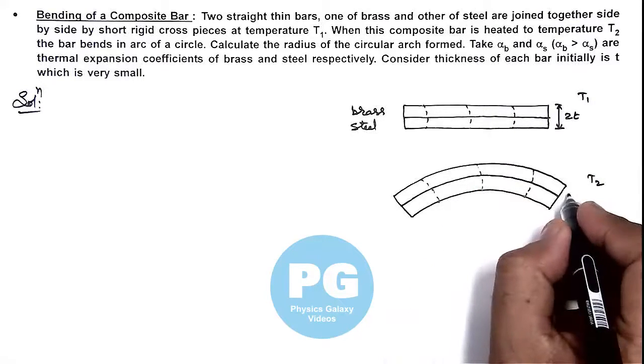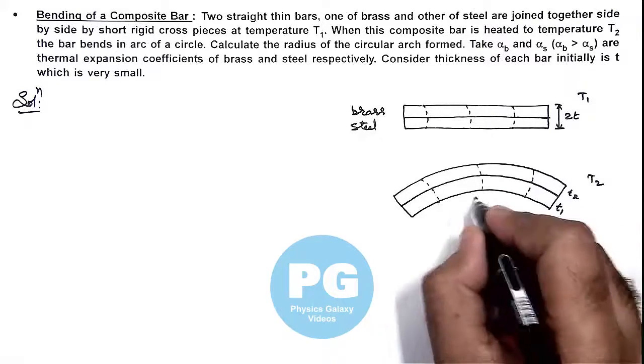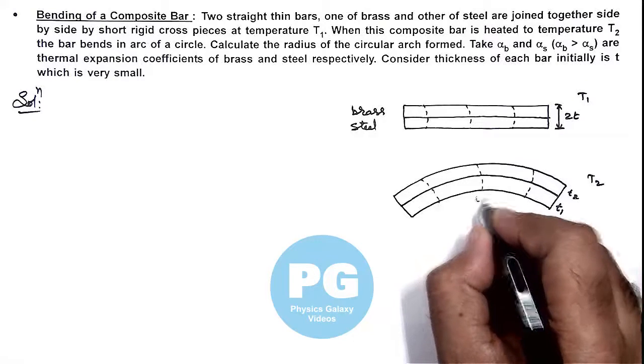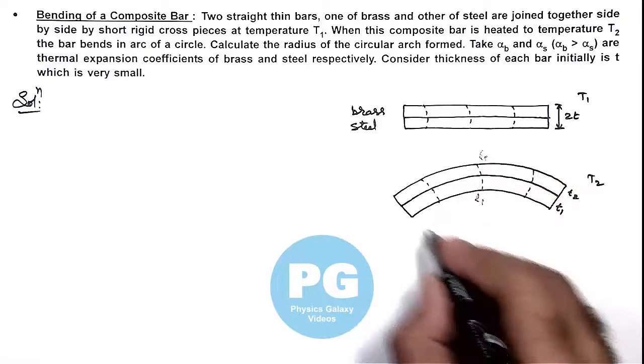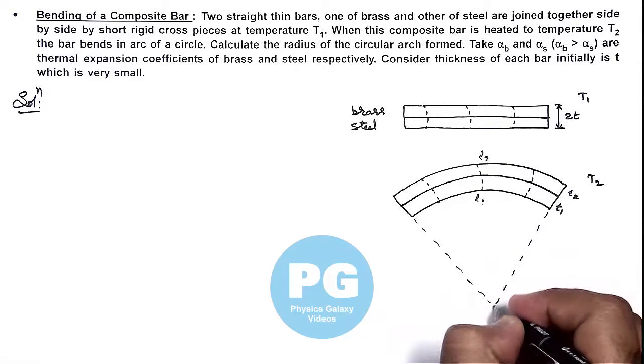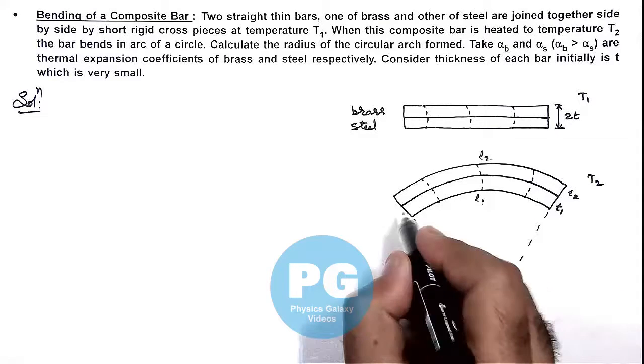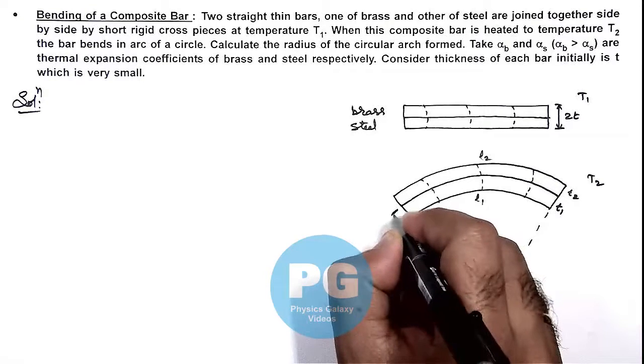And thickness will also change as T2 and T1. And if the lengths of steel and brass bars are L1 and L2, then we can see this forms a circular arc. If this is the center and the average radius of the bar is considered as R, then here we can write: